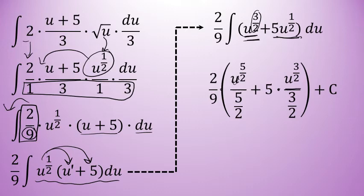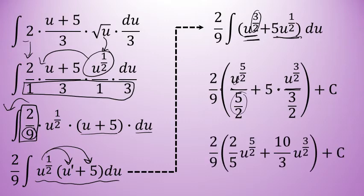Simplifying this, remember, if you divide by a fraction, that's the same thing as multiplying by the reciprocal. So u to the 5 halves over 5 halves is the same thing as 2 fifths times u to the 5 halves, and u to the 3 halves over 3 halves is the same thing as 2 thirds u to the 3 halves. Now 2 thirds times 5 is 10 thirds.